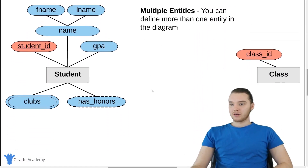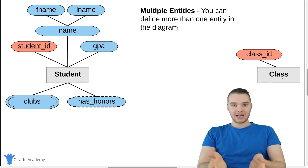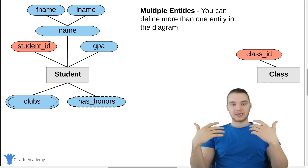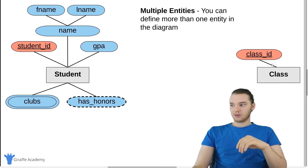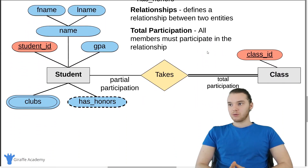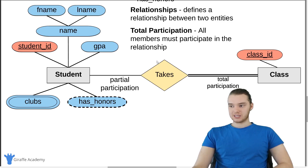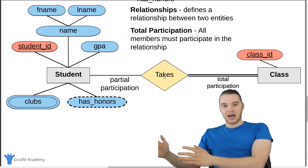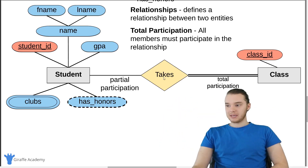We can also have multiple entities. So here I have my student entity, but I can also define another entity — class — which would be a particular class that a student is taking, like biology or chemistry. The class entity has a primary key which is going to be class ID. When we have multiple entities, we're going to want to define relationships between those entities. A relationship is basically just a diamond, and the relationship denotes that a student is going to take a class. A relationship is kind of like a verb — the student is related to the class. You can read this both ways: a student takes a class, or a class is taken by a student.